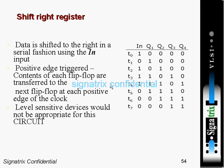This is the output here. These things are output — Q, Q1, Q2, Q3 are the outputs of the flip-flops.